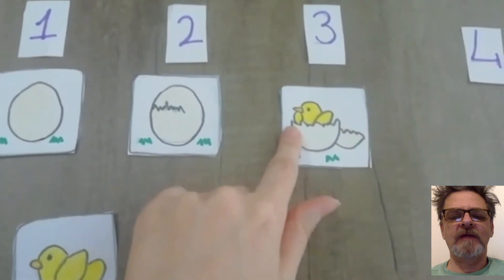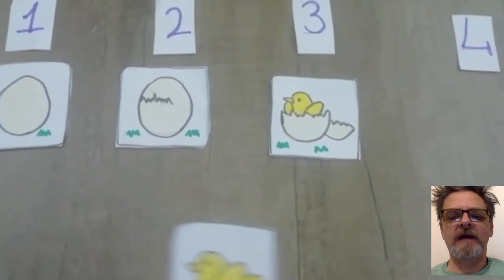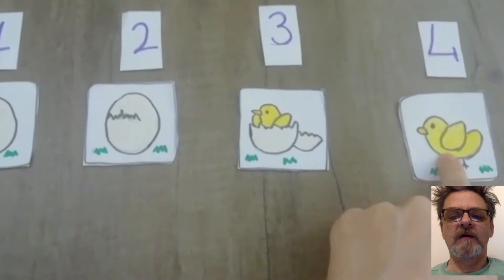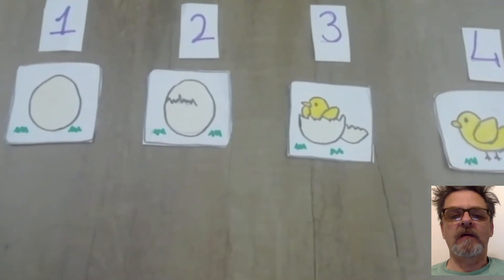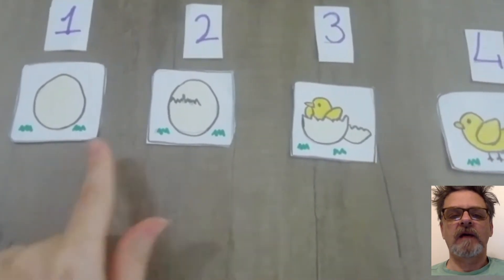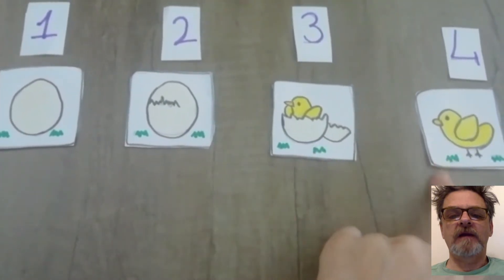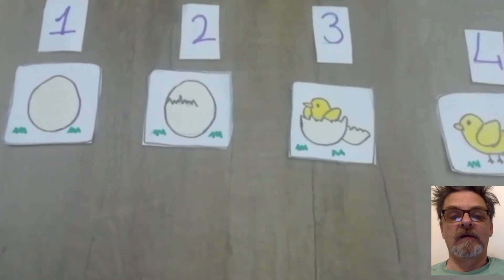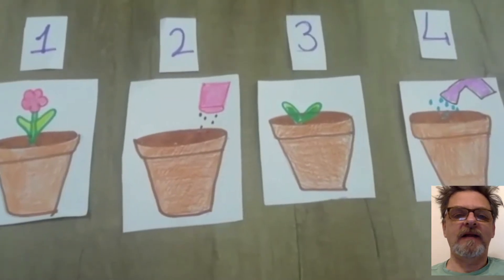And number three. The chicken is coming out of the egg. Number four. The chicken is walking around. Egg. Cracked egg. Opened egg. And the chicken is out. One, two, three, four. There we go.